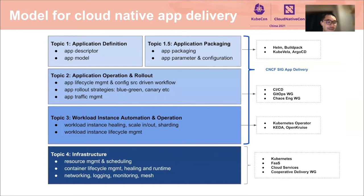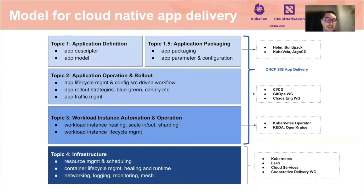This diagram summarizes the areas app delivery TAG covers. From bottom up, Kubernetes provides infrastructure abstractions across clouds. It is at this layer that the cooperative delivery working group works to combine application and infrastructure resources. On top of that, we have Kubernetes operators to manage workload operations — for example, Knative to handle auto-scaling and scale to zero, and OpenKruise to provide fine-grained deployment upgrade policies. Above that, we have user-facing interfaces that let users define how to roll out new application releases, how to do a canary rollout, and how much traffic to divert to new releases.